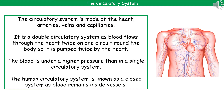When we talk about the circulatory system in humans, we're talking about the system made up of the heart, arteries, veins, and capillaries. It's referred to as a double circulatory system because it's separated into two halves — oxygenated and deoxygenated blood. The blood flows through the heart twice on one circuit around the body. The blood is under higher pressure than in a single circulatory system, and it's a closed system because the blood remains inside the vessels at all times.